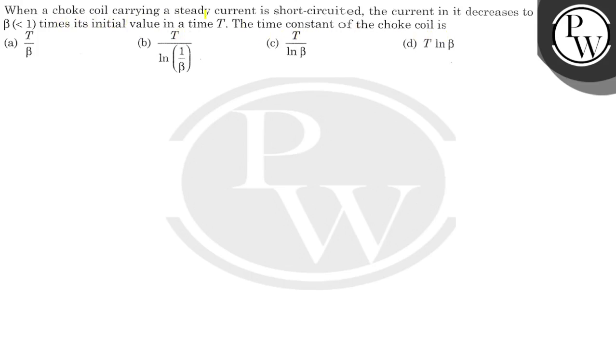A choke coil is given. A steady current is short-circuited, and the current decreases by beta times its initial value in a time capital T. We need to find out the time constant.